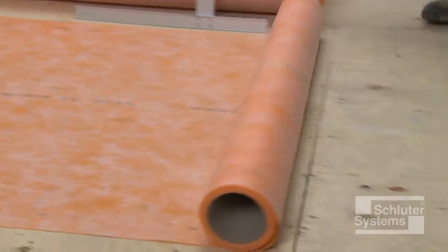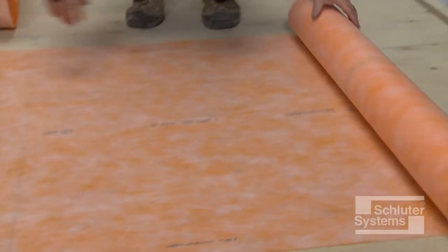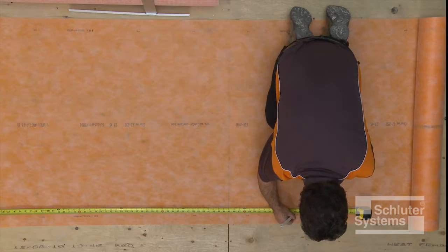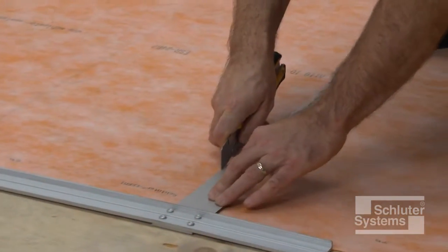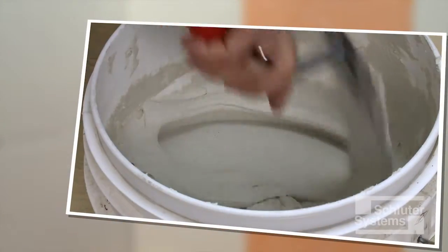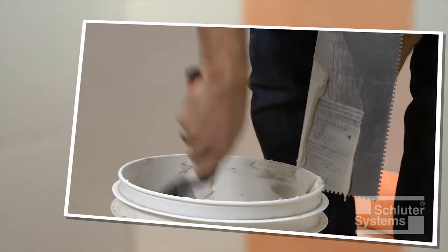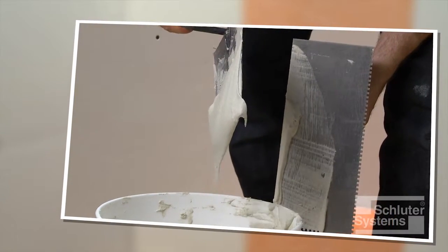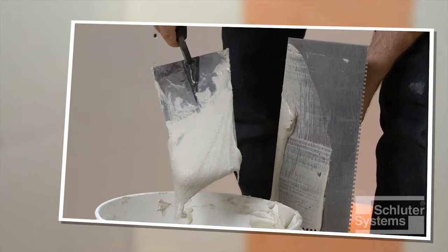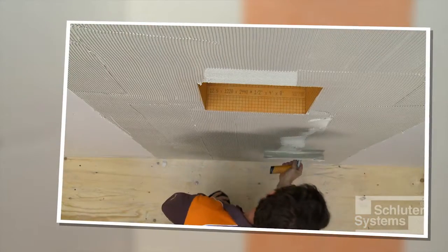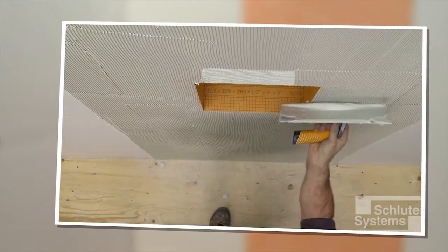The wall is made waterproof using the Schluter KERDI waterproofing membrane. KERDI is bonded to the solid backing and niche using unmodified thin-set mortar. The mortar is mixed to a fairly fluid consistency but still able to hold a notch.